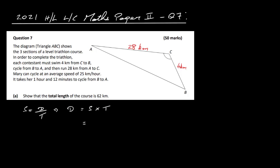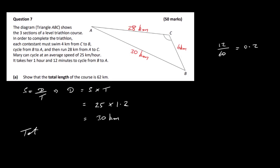To convert manually, take the 12 minutes, divide by 60, and you get 0.2, so it's 1.2 hours in total. Multiply 25 by 1.2 and you get 30 kilometres. The total length is then 28 plus 4 plus 30 kilometres, giving a total length of 62 kilometres.